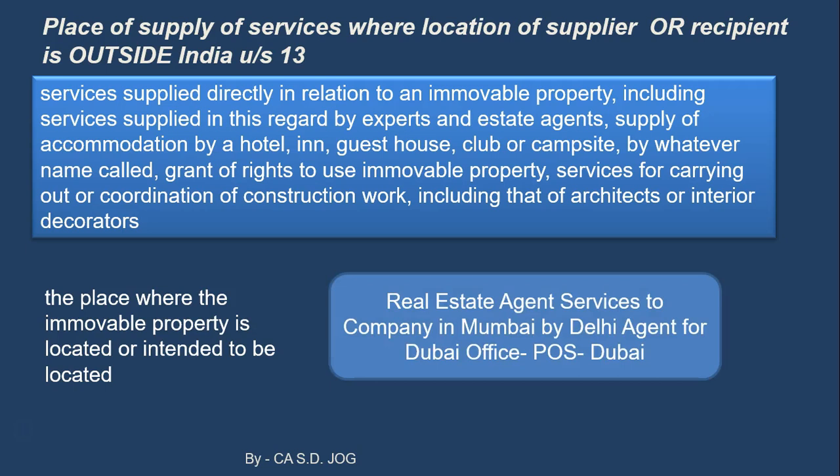Take an example: a real estate agent service is given to a Mumbai company by a Delhi agent for a Dubai office. So a Mumbai company wants to purchase one office in Dubai, and for that purpose an agent from Delhi is appointed. What is the place of supply of services of this agent? It is relating to real estate — immovable property. So wherever that immovable property is located, that is the place of supply of service. That is Dubai, because the office is situated in Dubai.